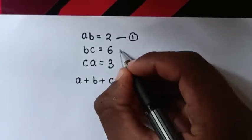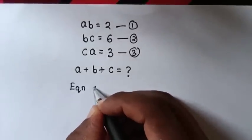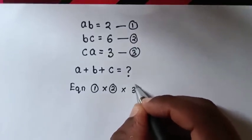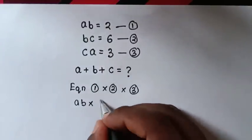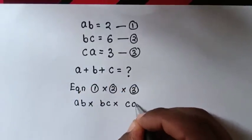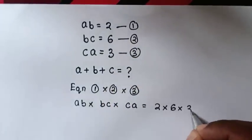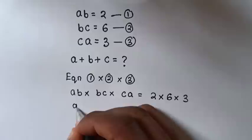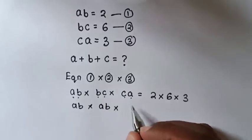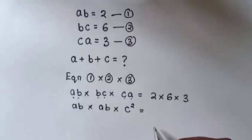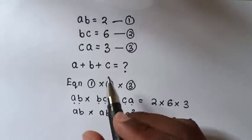So first, let this be equation 1, this equation 2, and this equation 3. From equation 1 times equation 2 times equation 3, it will be AB times BC times CA equals 2 times 6 times 3. So here AB times BC times CA gives A squared B squared C squared equals 2 times 6 times 3.